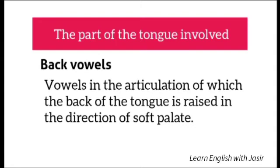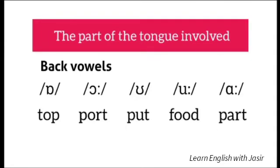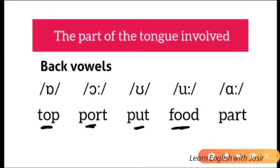Back vowels are articulated with the back of the tongue rising against the soft palate. The examples of back vowels in English are: O as in 'top', O as in 'pot', U as in 'put', U as in 'food', and A as in 'part'. These are the five back vowels in English, where the back part of the tongue moves against the soft palate.